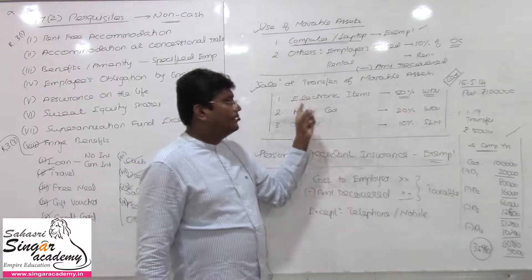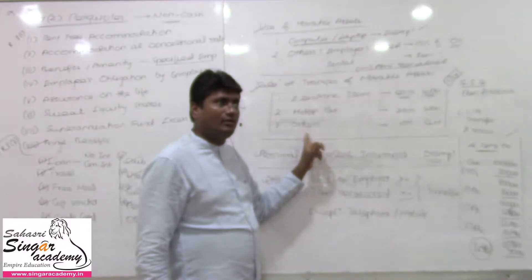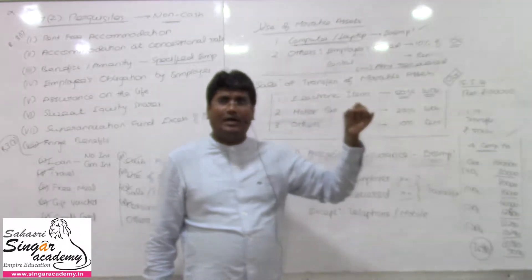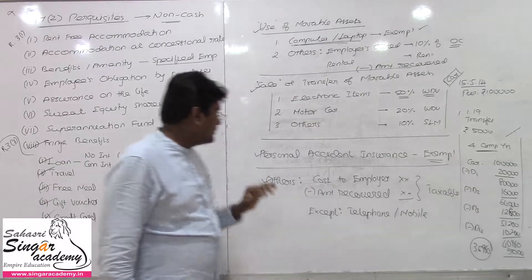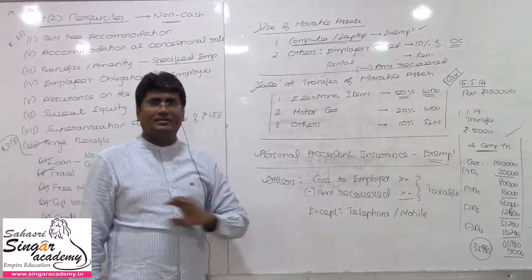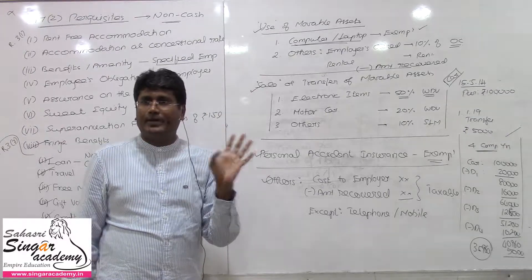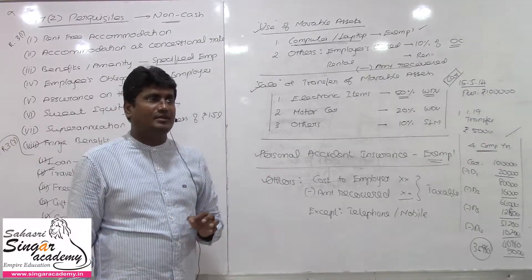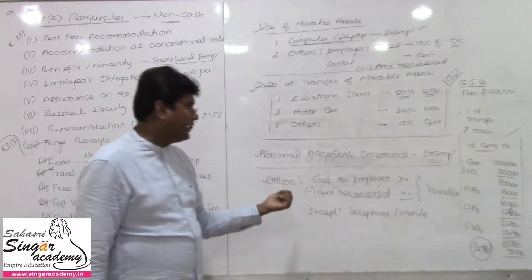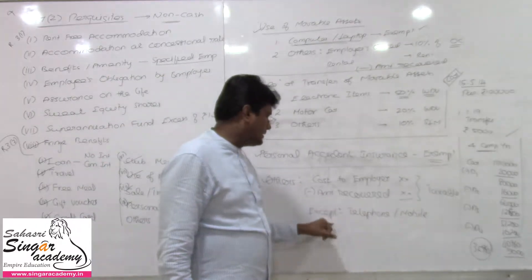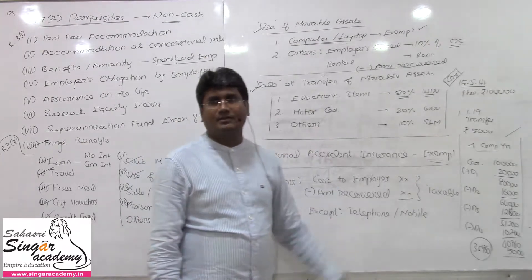Note: fridge and AC do not come under electronic items — they come under 'others'. Under electronic items come computer hardware and computer accessories. Personal accident insurance policy is always exempt. Finally, any other benefits offered by the employer to the employee as fringe benefits will be taxable to the extent of cost to the employer minus any amount recovered, except telephone and mobile offered by the employer to the employee.